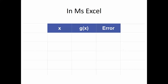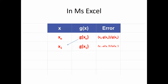In Microsoft Excel, the approach is simple — you only need three columns. The first column holds x₀, the assumed value. The second calculates g(x). The third calculates the error: the absolute difference between x₀ and g(x) divided by g(x), since g(x) is the more accurate value. If the error is within the required accuracy, you're done. If not, take g(x), put it as the new x₀, and repeat until you reach the required convergence.